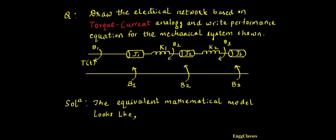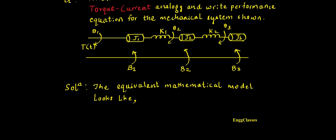Welcome to NG Classes YouTube channel for a video lecture series in control systems. In this video we shall consider a numerical to draw the electrical network based on torque-current analogy and write the performance equations for the mechanical system shown. The procedure is: first draw the equivalent mathematical model, then write the performance equations, apply torque-current analogy, and finally draw the electrical network.